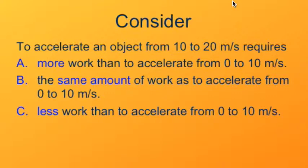In fact, going from 0 to 10, the average velocity is 5 meters per second. Going from 10 to 20, the average velocity is 15 meters per second. That's a three-fold difference, and indeed it takes three times as much work to accelerate from 10 to 20 as it does from 0 to 10.